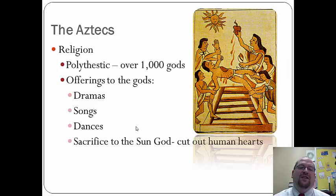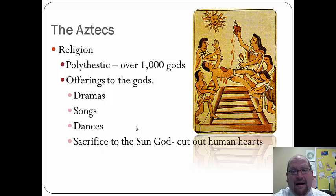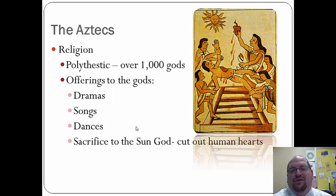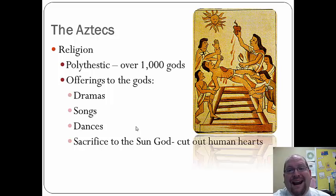The Aztec religion was polytheistic, with over 1,000 gods. They built large temples mainly to the sun god and the rain god. Religious practices included human sacrifice — cutting out human hearts — as well as dramas, songs, and dances as offerings. After cutting out hearts, bodies were kicked down the temple stairs. Under Montezuma, the scale of sacrifice increased, and it was not uncommon to sacrifice hundreds of people a day during certain parts of the year.